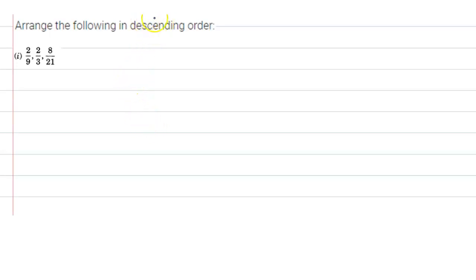Hello everyone, the given question is arrange the following in descending order. Descending order means largest to smallest, right?